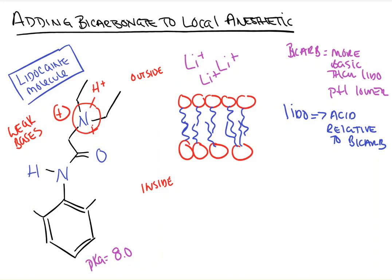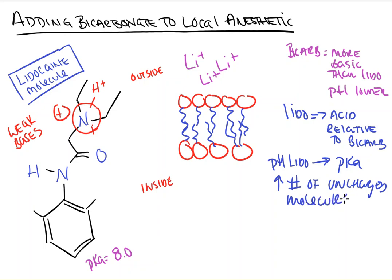By increasing the pH of the lidocaine towards its pKa, we are increasing the number of uncharged molecules. Before we said it was maybe 70–30, but now we're closer to 50–50 — meaning 50 charged and 50 uncharged instead of 70 charged and 30 uncharged. As we said, lidocaine is better at passing through the cell membrane when uncharged, so more lidocaine molecules are able to pass through the cell membrane and get into the cell.